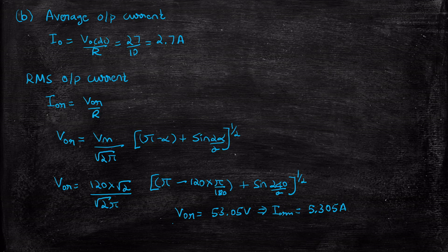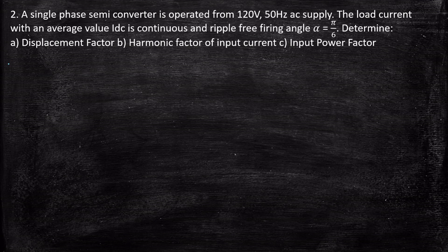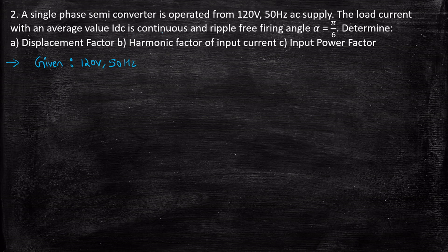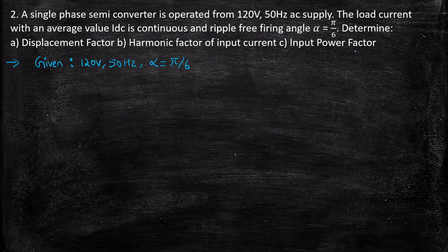I hope this problem is clear. Now let's solve the next problem. The second problem states: a single-phase semi-converter is operated from 120 volt, 50 hertz AC supply. The load current with an average value IDC is continuous and ripple free, and the firing angle α = π/6. This indirectly hints that there is a large inductor and it is continuous mode of operation — so this is an RL load. Determine the displacement factor, harmonic factor, and input power factor.